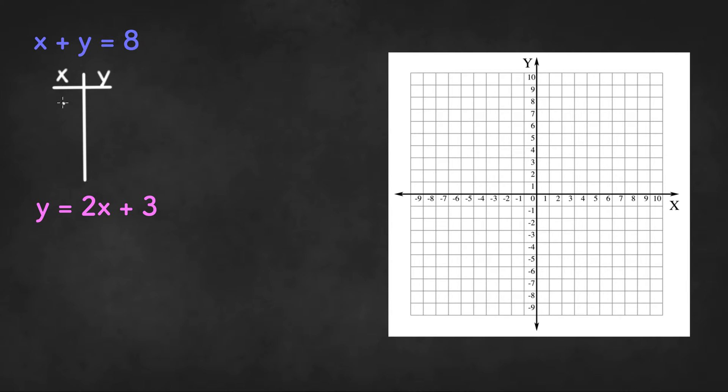So suppose we say x equals 0. If x equals 0, then 0 plus y must equal 8 and y needs to be 8 for the equation to be true. So our first coordinate would be the point 0 comma 8 right here. We can plot this point on the coordinate plane, we have 0, 8 and here's the point.